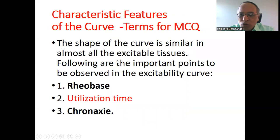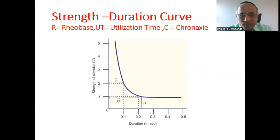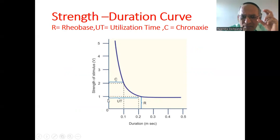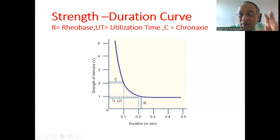Following are the important points to be observed in the excitability curve. The question can be asked as 'excitability curve' or 'strength duration curve.' The three important terms are: Rheobase, Utilization Time, and Chronaxy. Rheobase is the minimum strength — approximately 1 volt here. Utilization time is how much time — 0.2 seconds — is required by the muscle to get excited after a minimum voltage stimulus.